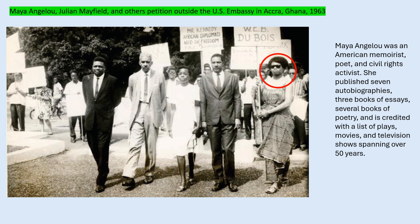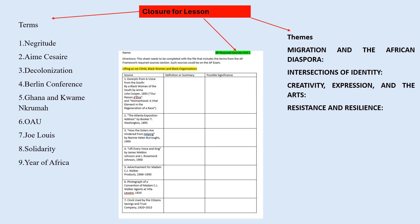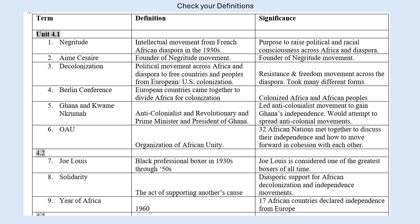Another required image emphasizes Maya Angelou, mentioning plays, movies, and television. On the closure slide: What is colonialism? How did activists link colonialism to the experience of Africans globally? You should have an understanding of the terms covered here, and if you want to check your definitions, feel free to use this particular slide.